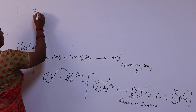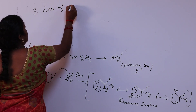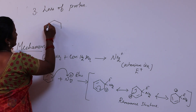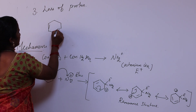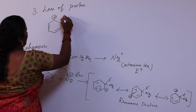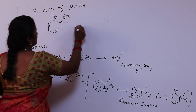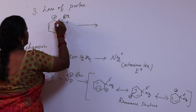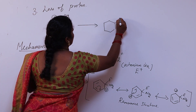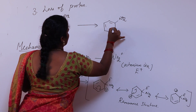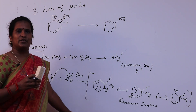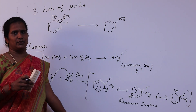The third step is loss of a proton. From the resonance structure, the proton is lost — the proton shifts away from the carbon bearing NO2. This gives the final product, nitrobenzene. This mechanism — electrophile attack followed by proton loss — is common to nitration, halogenation, and sulfonation.